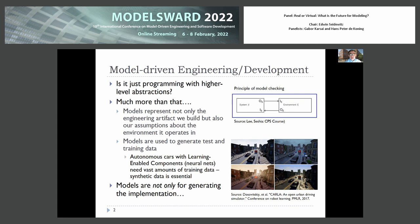In model checking, we create a model of the system that is open. To verify that the system works as expected in its operational environment, we also have to create a model of the environment and put the two together, forming a closed system that we can subject to a verification algorithm. That's a classical principle of model checking — we have 40 years of experience doing that.